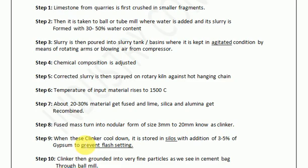In step 9, the clinker at 1500 degrees Celsius is cooled down and from the rotary kiln it is stored in silos where 3 to 5 percent of gypsum is added to prevent flash setting. Adding gypsum is very important — if we do not add gypsum, as soon as you add water, within a few minutes the cement will set and you will not have any time to transport it or use it as a construction material.